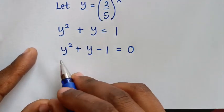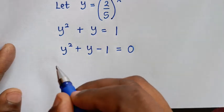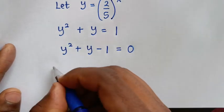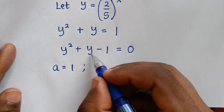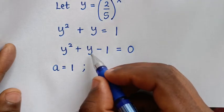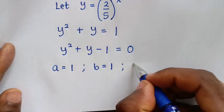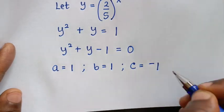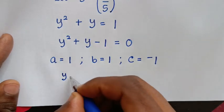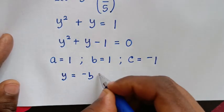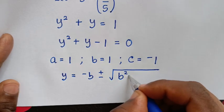We solve this quadratic equation using the quadratic formula. The coefficient of y² is 1, so a = 1. The coefficient of y is 1, so b = 1. The constant is negative 1, so c = −1. The quadratic formula gives y = (−b ± √(b²−4ac)) / 2a.